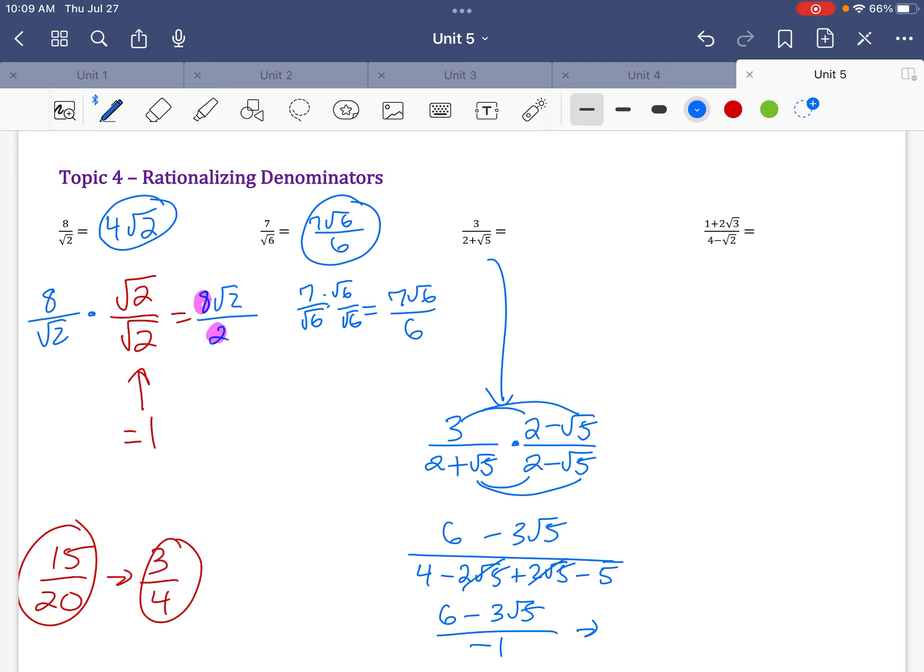And I can leave my answer like that, but I could just divide both parts by negative 1 because it turned out to be a nice, easy answer. 6 over negative 1 is negative 6. Negative 3 radical 5 over negative 1 is plus 3 radical 5. And so you see how there's no radical in the denominator anymore.